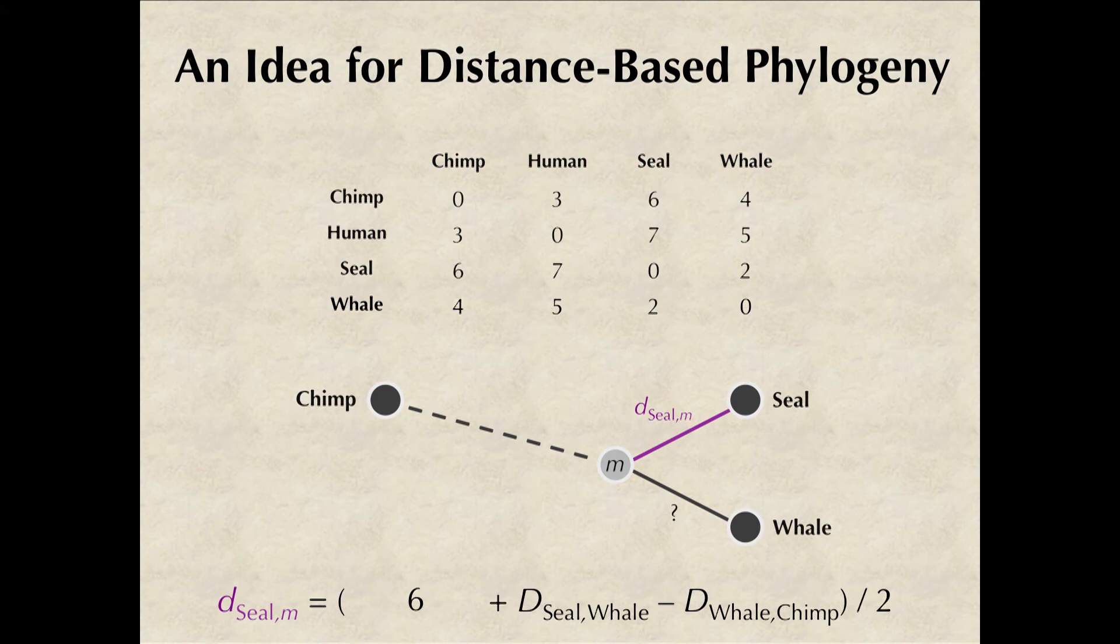Now we can just plug in the values from the distance matrix. So the distance from seal to chimp is 6, the distance from seal to whale is 2, and the distance from whale to chimp is 4. So the distance from seal to its parent is 4 divided by 2 or 2.